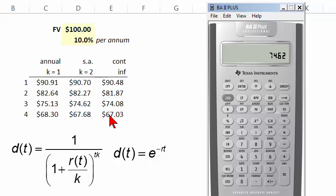Now, let me just do one more. Let me compute the $100 received in four years, but under continuous discounting. So in this case, this discount factor is really elegant.